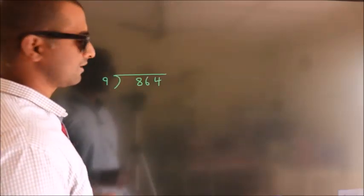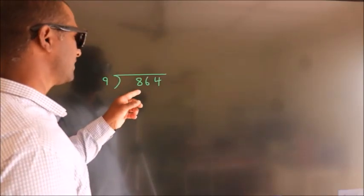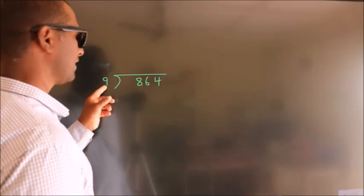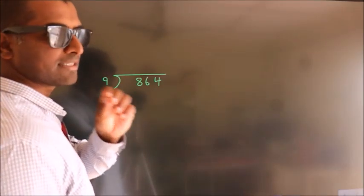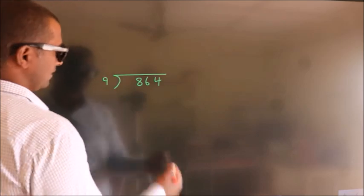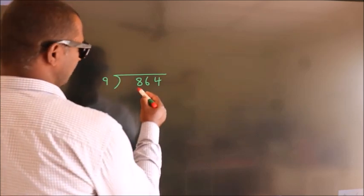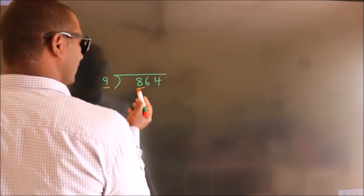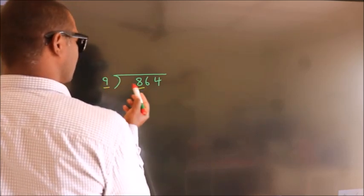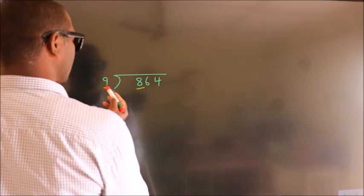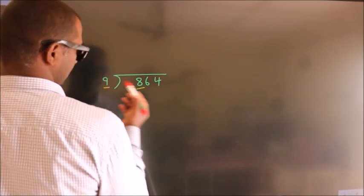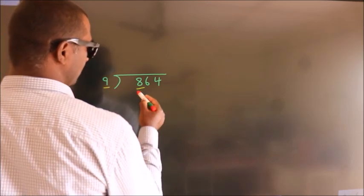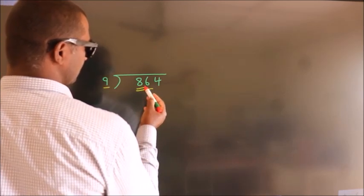How to divide 864 by 9? Here we have 8, here 9. Since 8 is smaller than 9, we should take two numbers: 86.